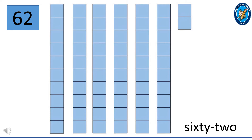This is 62. 6 and 2 make 62. 62 is made up of 6 ten-squared blocks and 2 squares. So 60 plus 2 is 62. You can see the number name on the bottom right of your screen.